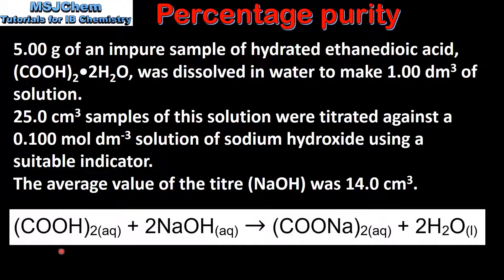We will start by looking at the balanced equation for the reaction. One mole of ethanedioic acid reacts with 2 moles of sodium hydroxide to form 1 mole of salt and 2 moles of water. Note that the ethanedioic acid reacts with the sodium hydroxide in a 1 to 2 ratio.